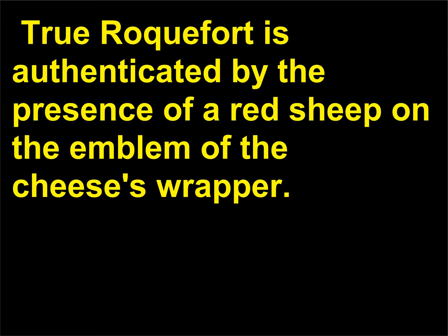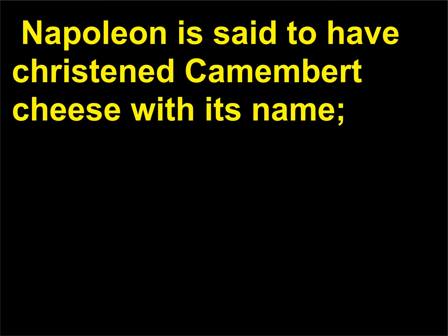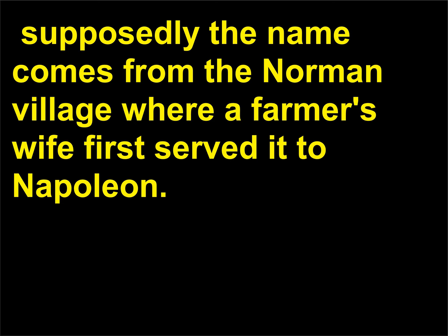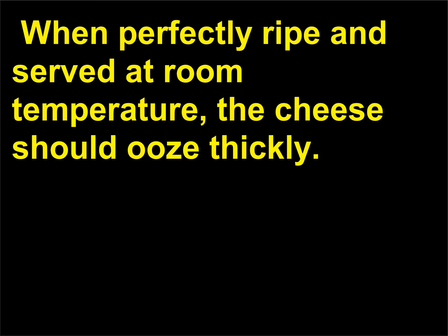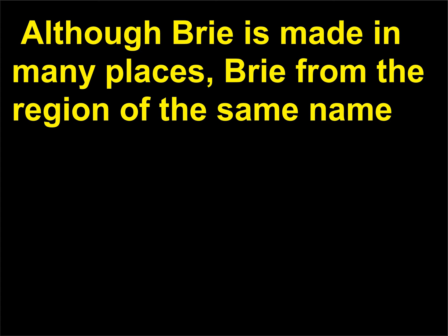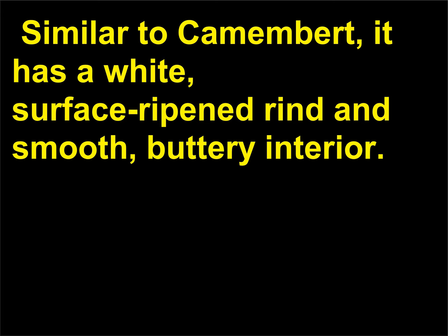True Roquefort is authenticated by the presence of a red sheep on the emblem of the cheese's wrapper. Penicillium camembertii gives Camembert and Brie cheeses their special qualities. Napoleon is said to have christened Camembert cheese with its name, supposedly from the Norman village where a farmer's wife first served it to him. This cow's milk cheese has a white, downy rind and a smooth, creamy interior; when perfectly ripe at room temperature, the cheese should ooze thickly. Although Brie is made in many places, Brie from the region east of Paris is considered one of the world's finest cheeses — similar to Camembert, it has a white surface-ripened rind and smooth, buttery interior.